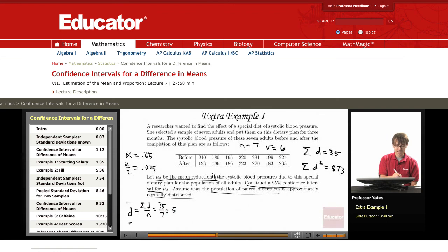I also want sd which is going to be summation d squared minus summation d quantity squared over n divided by n minus 1. So this is going to give me 873 minus 35 squared over 7 divided by 6 and we get sd to be about 10.7858.